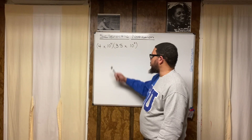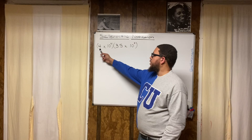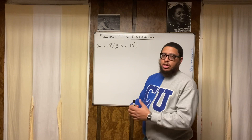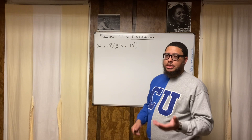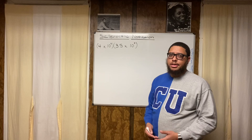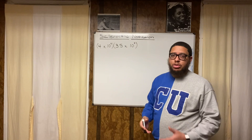We know this is multiplication because you see the parentheses and no symbol in between. We're going to multiply the 4 and the 3.5 — you can think of those as coefficients. The tens tell you how many spaces the decimal point should be moved if the number were written in regular expanded form. Scientific notation allows us to save space — if a number has a factor of 10 to the 58th power, you might have 58 zeros. You wouldn't want to write all that out.